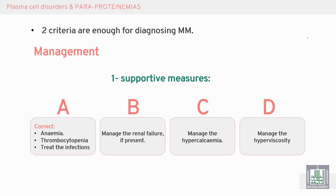Management of multiple myeloma follows the ABCD framework. A: to correct anemia, thrombocytopenia, and the treatment of infection by blood transfusion and using prophylactic antibiotics. B: management of renal failure if present, or preventing renal failure due to multifactorial causes. C: management of hypercalcemia.